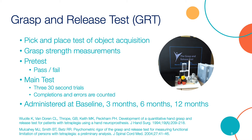Three of the objects — the peg, weight, and fork — measure lateral prehension. The remaining three objects — the block, can, and videotape — measure palmar or five-finger prehension. The test objects are surrogates for things we encounter in daily activities, such as finger foods, books, beverage cans, or utensils. The test consists of three parts: measurement of grasp strength, a pretest, and a main test.